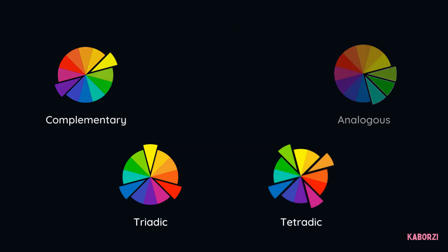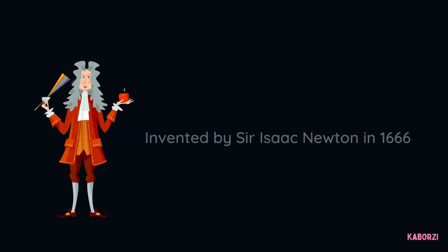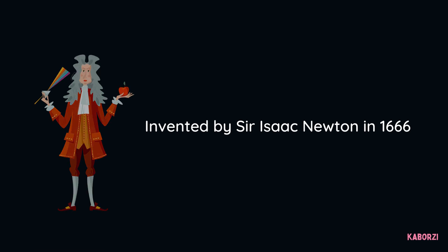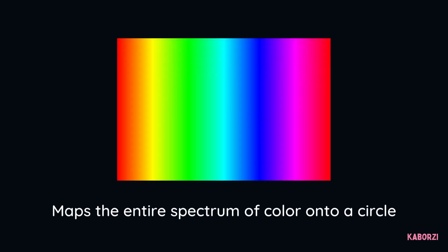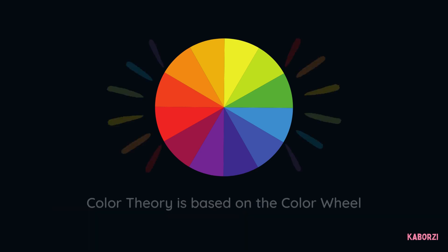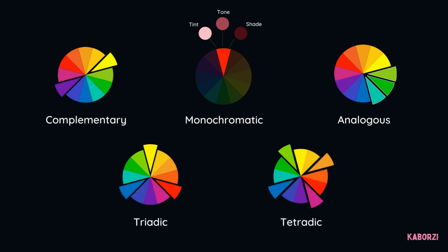The system is based on a centuries-old tool called the Color Wheel, which you may be somewhat familiar with if you have ever taken an art class. Invented by Sir Isaac Newton in 1666, the Color Wheel maps the entire spectrum of color onto a circle. Color Theory is based on the Color Wheel, and the system shows a systematic relationship between all of the colors within the circle.